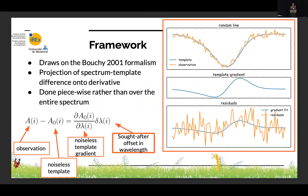For each line in the mathematical framework, we have a noiseless template built from all observations. We use a framework introduced more than 20 years ago by Bouchy, where your RV signal is basically the derivative scaling — the derivative of the difference between your current observation and the template. Your RV is encoded by the sought-after motion in wavelength space. You have a schematic version where you take the template gradient and adjust it to the residual between the observation and the template.